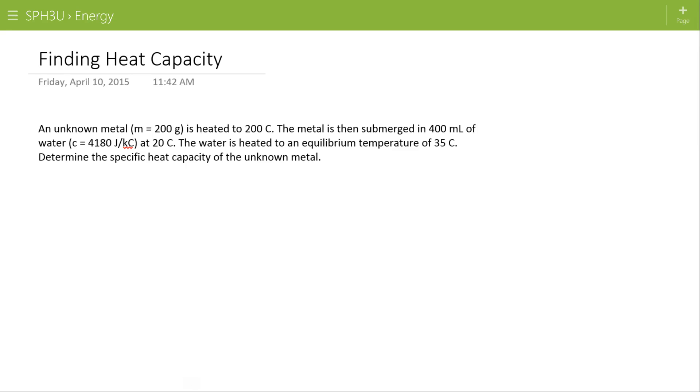To determine the specific heat capacity of the unknown metal. This is essentially the same as calculating equilibrium temperature, but this time it's the C of the metal that's the unknown. It actually makes the math a little bit easier.